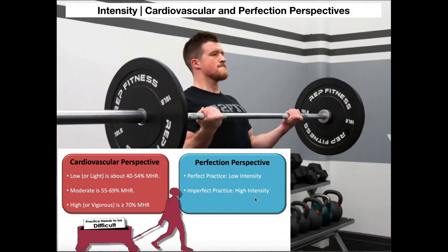Imperfect practice would be high intensity. By intensity, we just mean that if we're doing perfect practice, it's a low enough intensity that it's fairly easy for the person to complete the task without errors. So the solution, if we wanted to increase the intensity, is just to make the task harder — change some parameter, make it more difficult so that person starts making errors. And now we have imperfect practice.